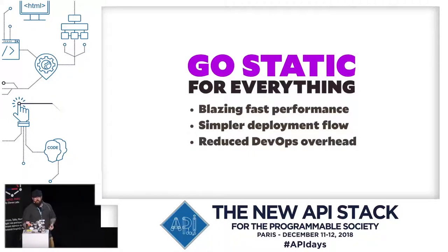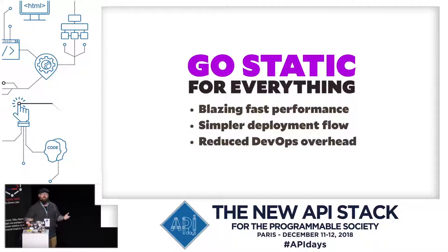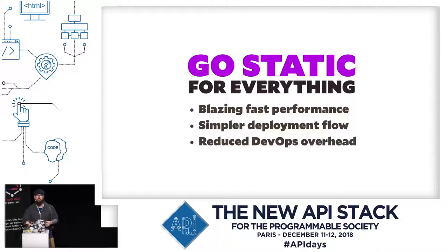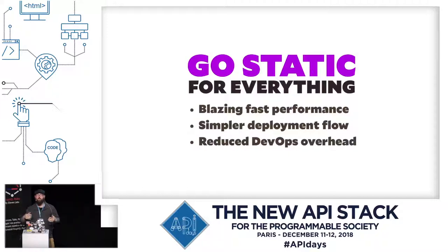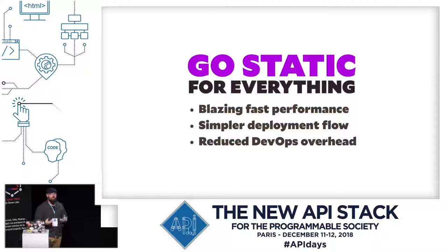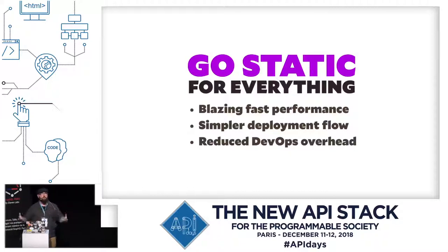Going static for everything gives you huge benefits. You get blazing fast performance — you cannot make a server-rendered page go faster than a statically rendered asset. If your server-side is faster than a static page, it's because you've cached it and you're now serving a static asset. You also get a simpler deployment workflow — building files to a folder and uploading to a CDN is significantly simpler than managing horizontal scaling, fallback mechanisms, and cache clearing. You also get reduced DevOps overhead since you're no longer managing servers.